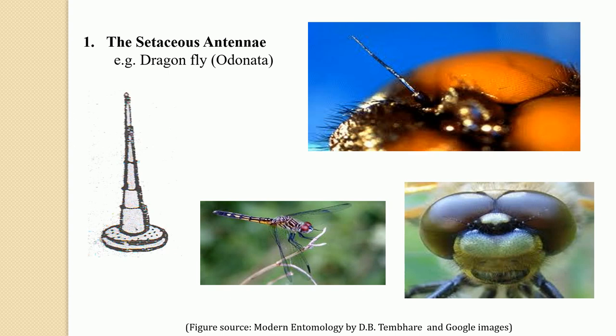The sexual dimorphic significance means that in different sexes, for example, the male mosquito contains a different type of antennae and the female contains a different type of antennae. Whenever a variation among the segments of antennae is found in a sex-wise manner, it is referred to as sexual dimorphic significance.